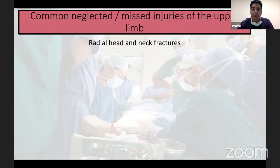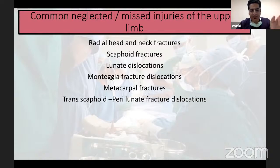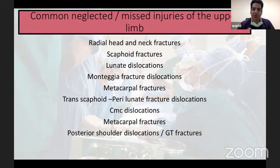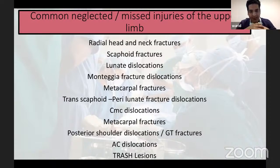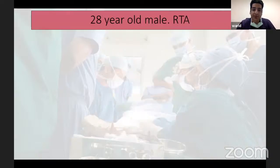Injuries that usually get missed or neglected include: radial head and neck fractures, scaphoid fractures, lunate and perilunate dislocations, Monteggia fracture dislocations (especially in children), metacarpal fractures, transcaphoid perilunate fracture dislocations, CMC joint dislocations, posterior shoulder dislocation with greater tuberosity fracture, AC joint dislocations, and trash lesions in pediatric elbow injuries. Additionally, PIP joint fracture dislocations and the terrible triad of the elbow are not managed properly and get neglected.